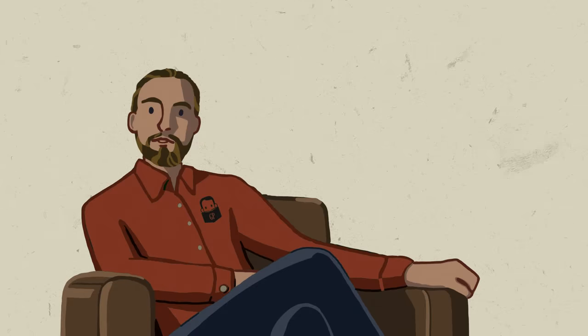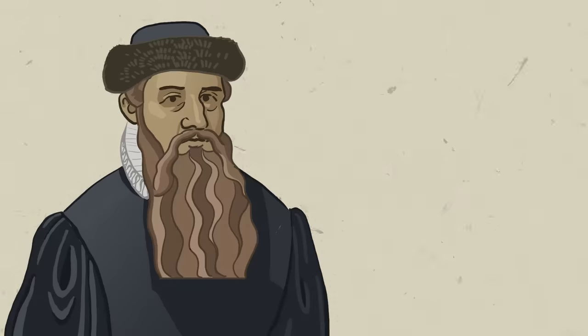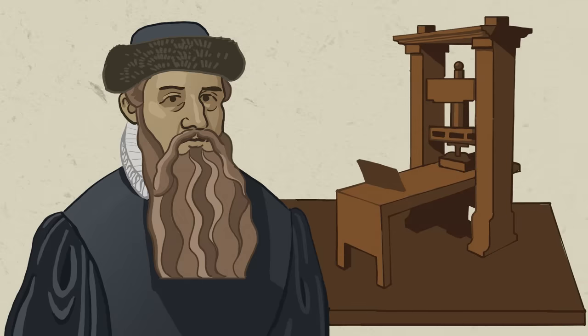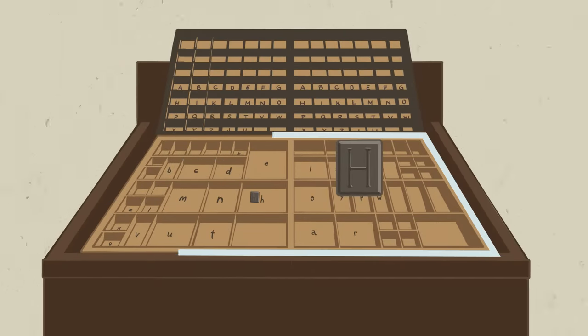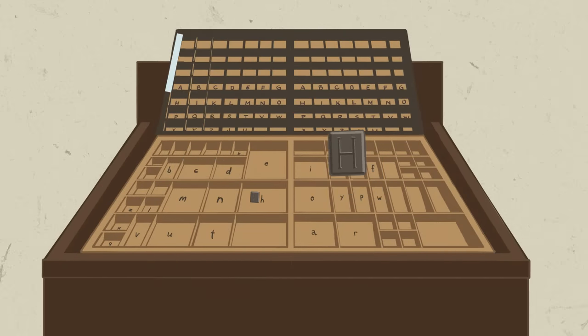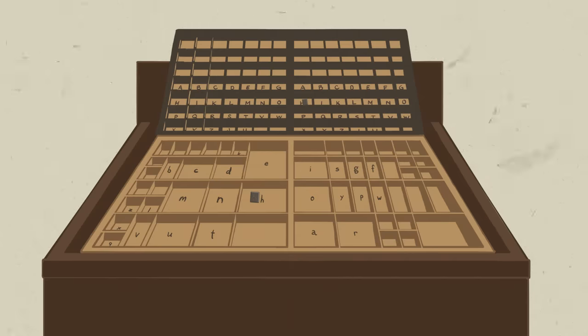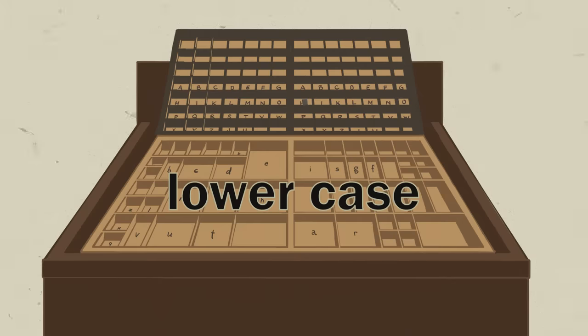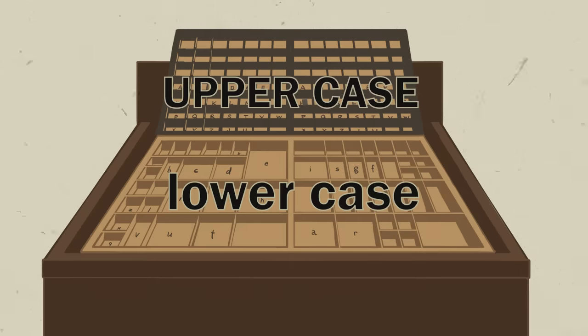A couple more things before we wrap up. One: printing. In the 15th century, Johannes Gutenberg created the first printing press, which sparked the printing revolution. The printing press worked through movable type, and there were two pieces of type for each letter. The minuscule letters were kept in a drawer closer to the printer, as these sorts were used more frequently. The capital letters were kept in a case above the main working station — so the terms lowercase for minuscules and uppercase for capitals were established.